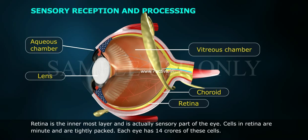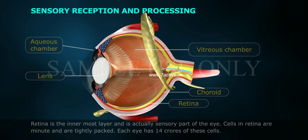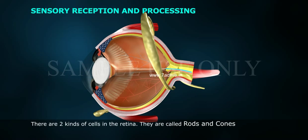The retina is the innermost layer and is actually the sensory part of the eye. Cells in the retina are minute and tightly packed. Each eye has 140 million of these cells, and there are two kinds of cells in the retina.